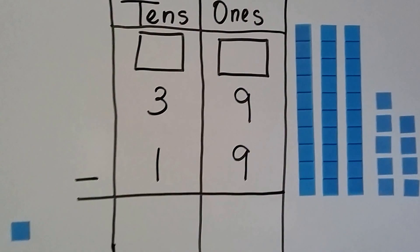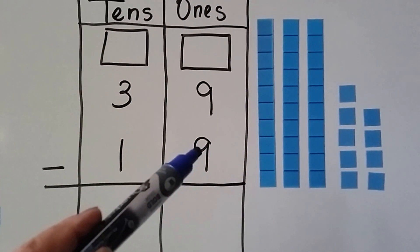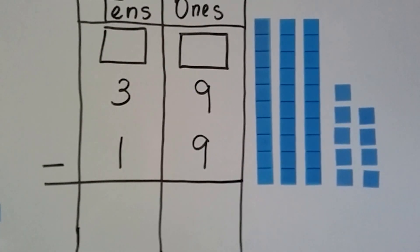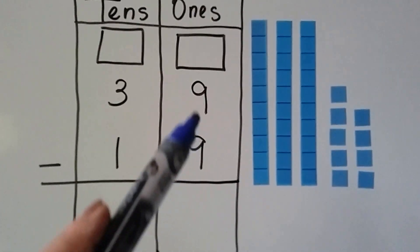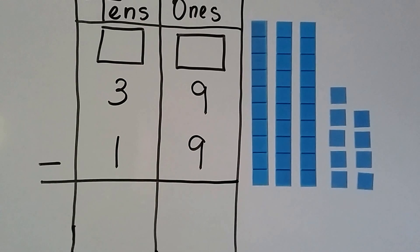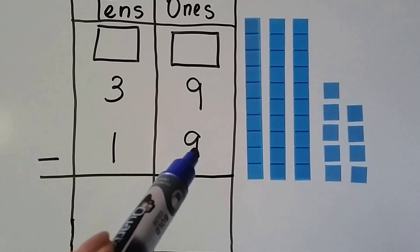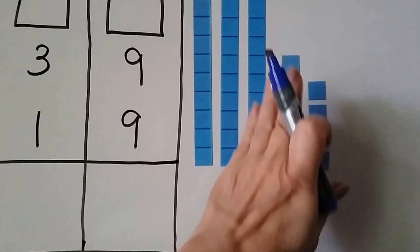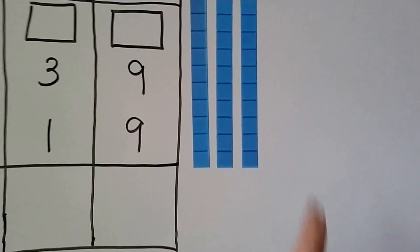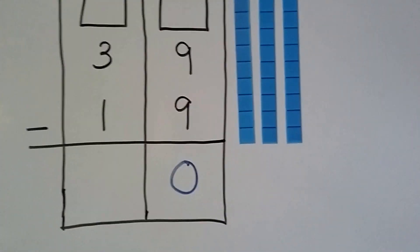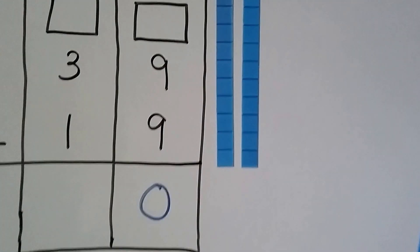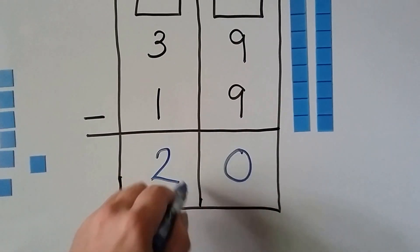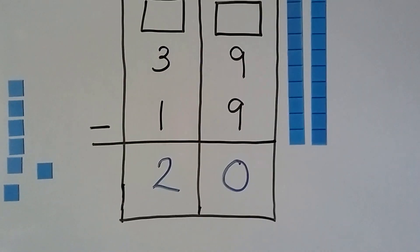Let's try it one more time. We've got 39 minus 19. We look at the 1's place — if this number is greater than the one above it, then we need to regroup. But look, they're both 9. So do we need to regroup? No, they're the same, so we don't need to regroup. 9 take away 9 — how many ones do we have left? None, we have a 0. We have 3 tens and we need to take away 1 ten, leaving 2 tens. 39 minus 19 is equal to 20.